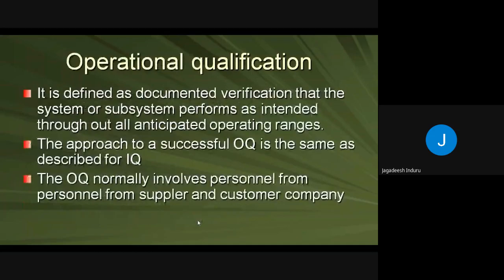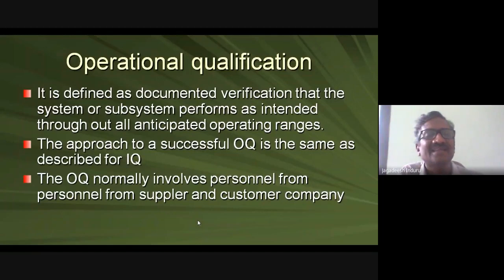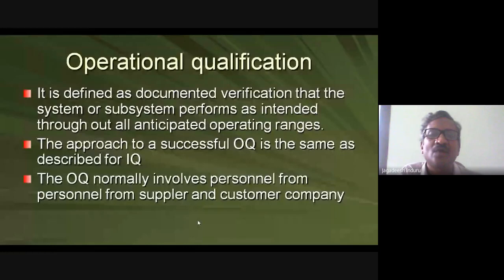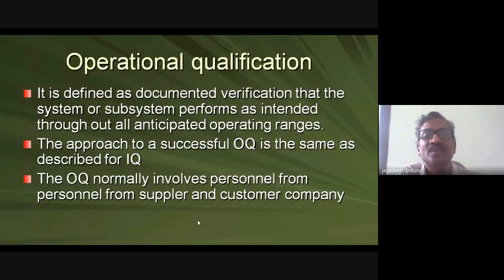Operational Qualification (OQ) is defined as documentary verification — comparing a predetermined document against reality — that the system or subsystem performs as intended throughout the anticipated operating ranges. For example, in a tray dryer (the system), the fan and coils are subsystems, and the vacuum pump is another subsystem. If you want to operate the dryer from 40°C to 200°C, you check whether it works consistently at both limits.